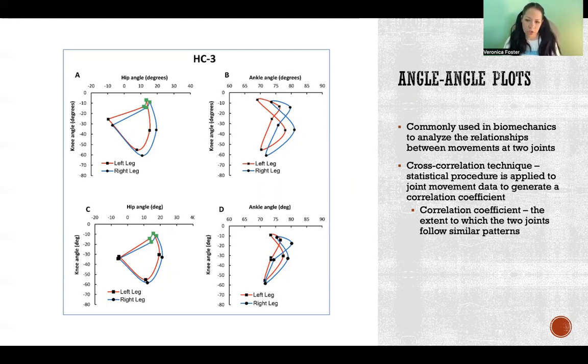So cross-correlation technique is a statistical procedure where we apply that statistical procedure to joint movement. And we're looking for a correlation coefficient, which you see throughout statistics. So correlation coefficient is really just saying the extent to which two things tend to follow the same pattern or tend to happen at the same time, where zero means that they don't happen together at all, and one would mean an absolute correlation where they always happen exactly the same way at the same time.